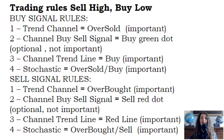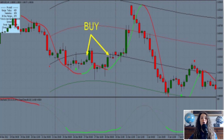Trading rules — Sell High, Buy Low. Buy signal rules: Trend Channel equals oversold — important. Channel Buy Sell Signal equals buy green dot — optional, not important. Channel Trend Line equals buy — important. Stochastic equals oversold buy — important.